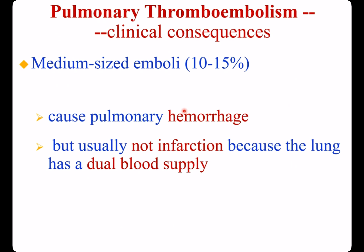Median-size emboli account for 10% to 15%. They cause pulmonary hemorrhage, but usually not infarction, because the lung has a dual blood supply.